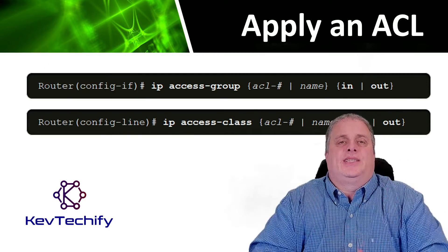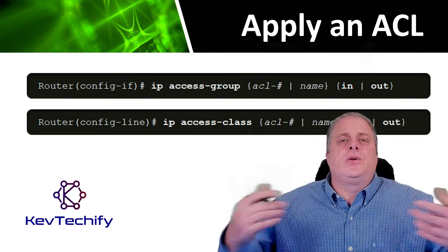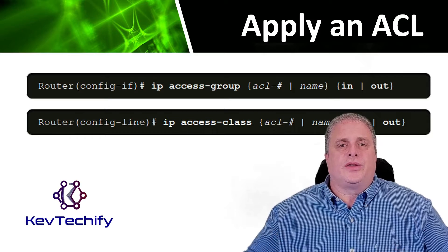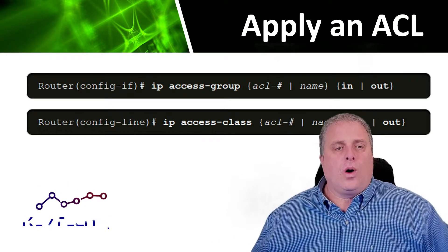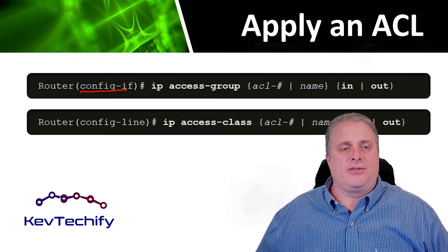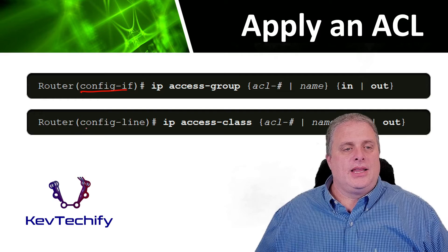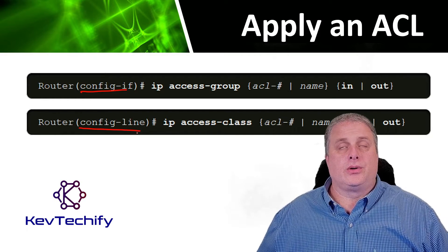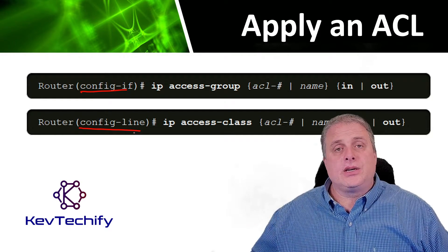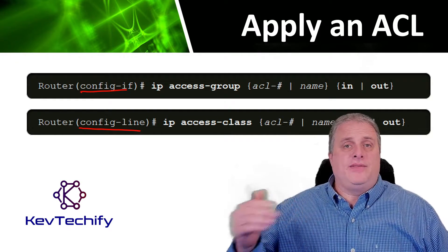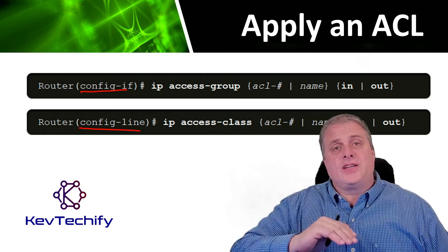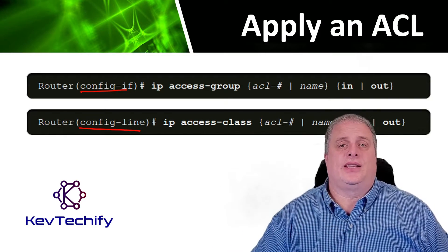After you create an ACL, you can apply it in a couple of different ways. Here are two examples. One, we're applying it to an interface. The other, we're applying it to a line — line con 0 or line VTYs. You can apply it to your interfaces or your line connections.